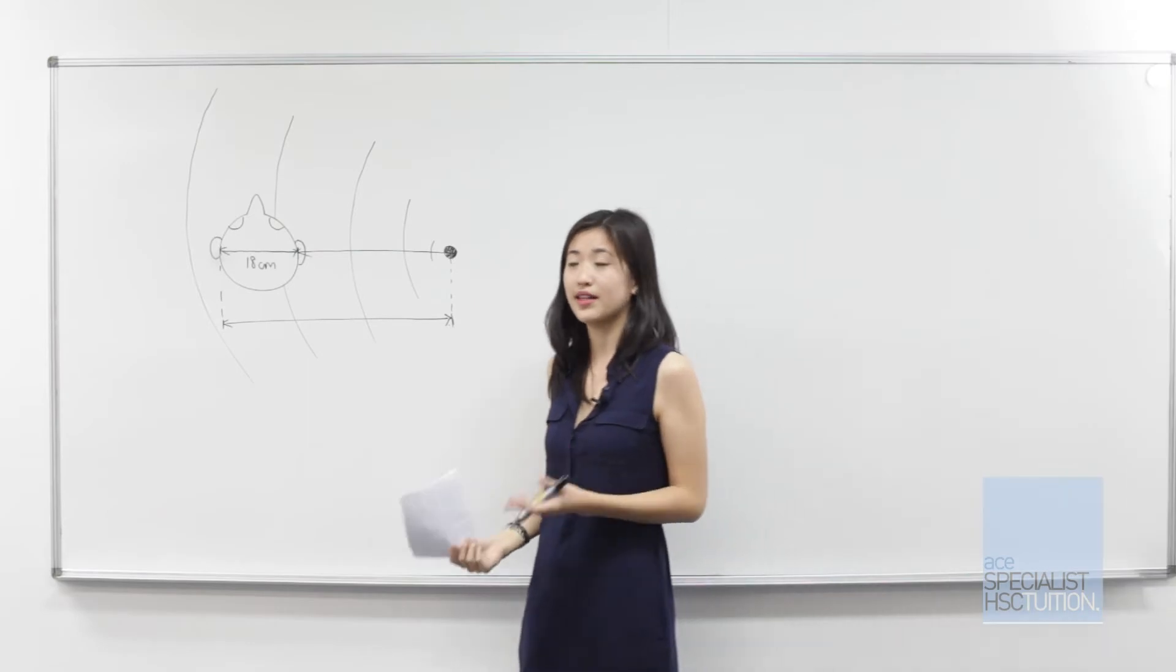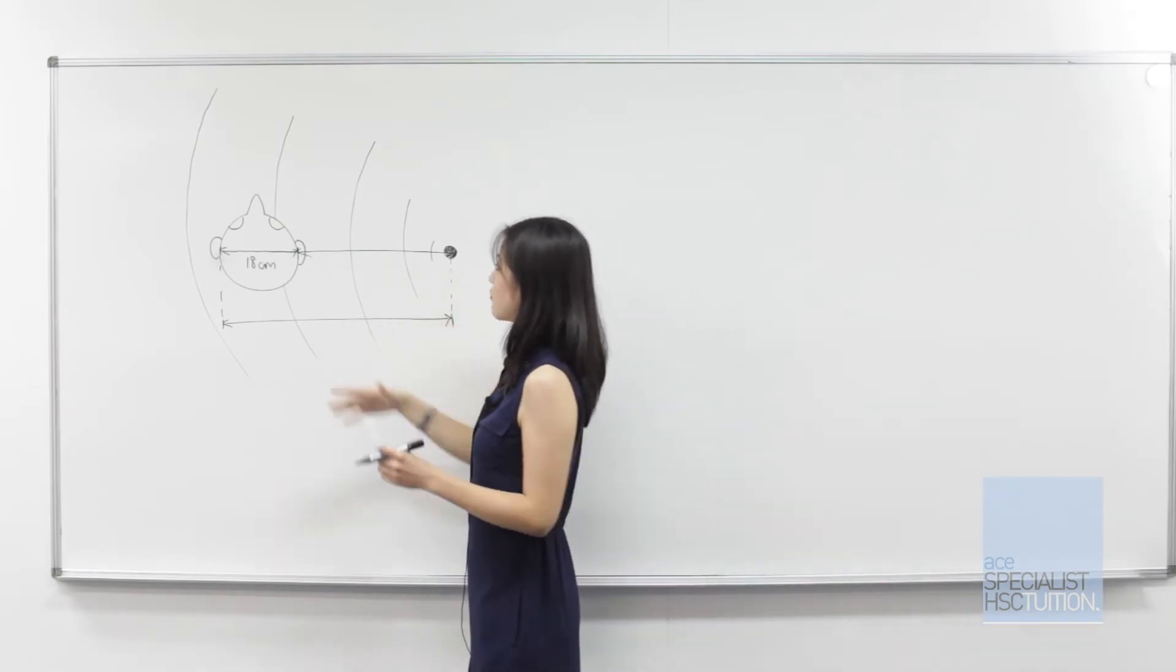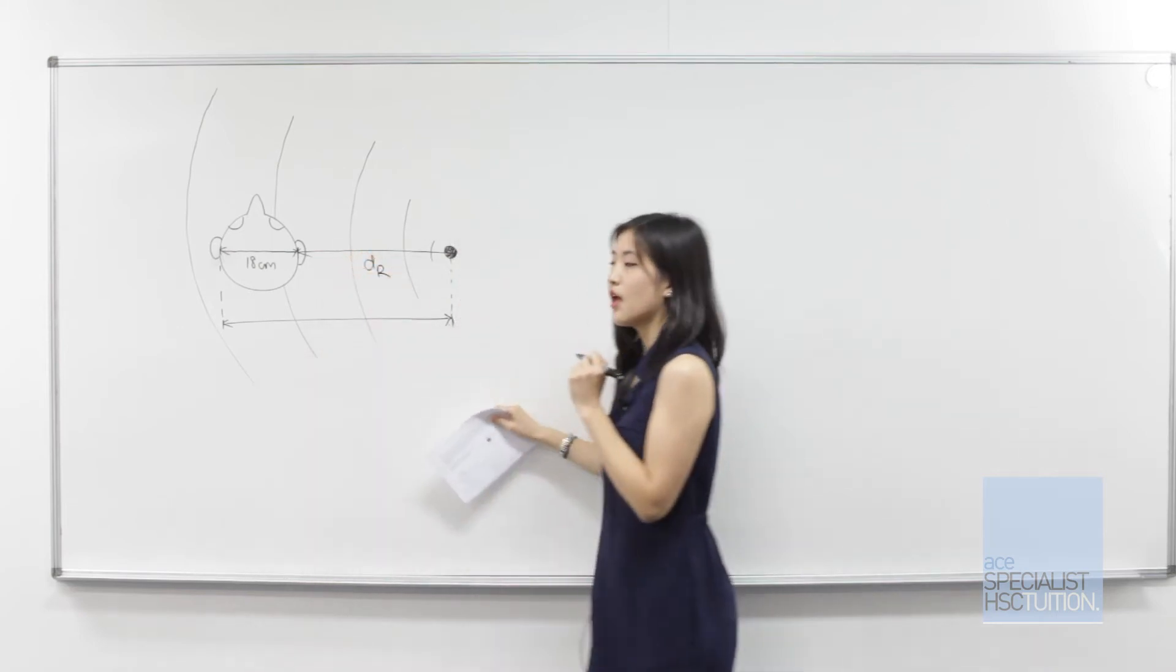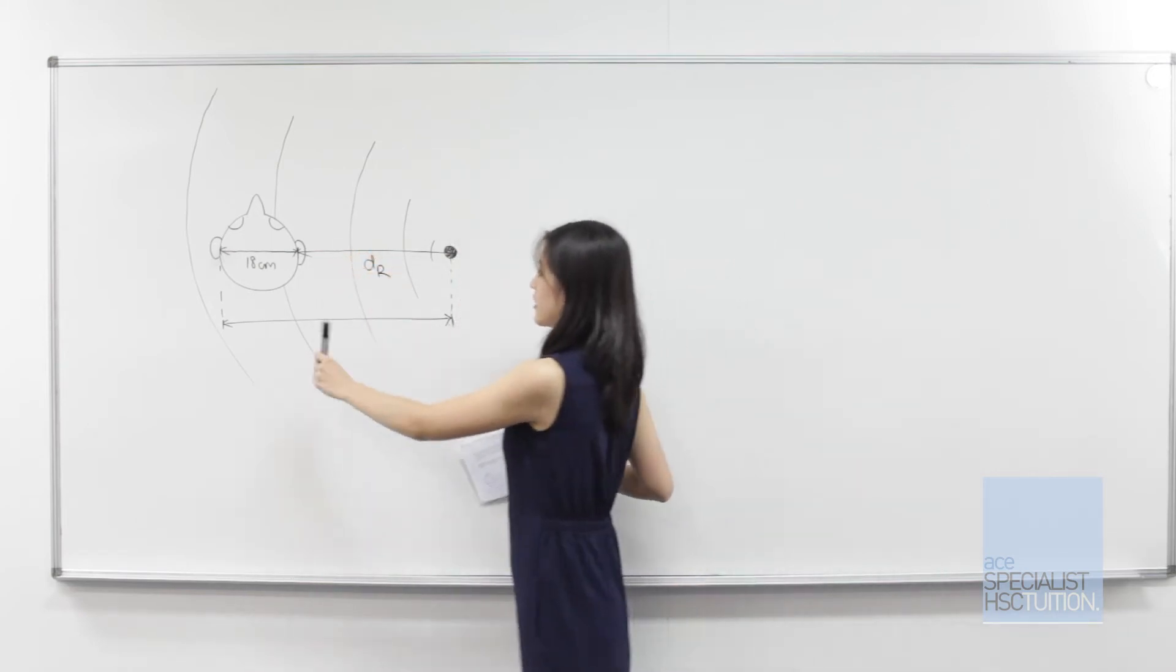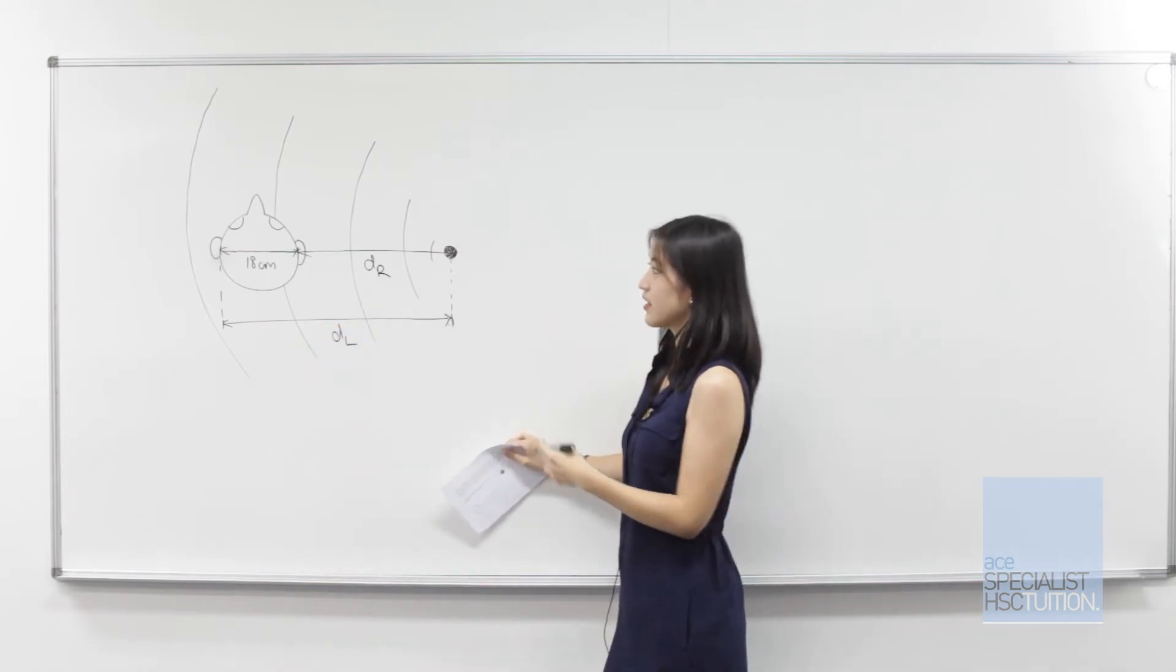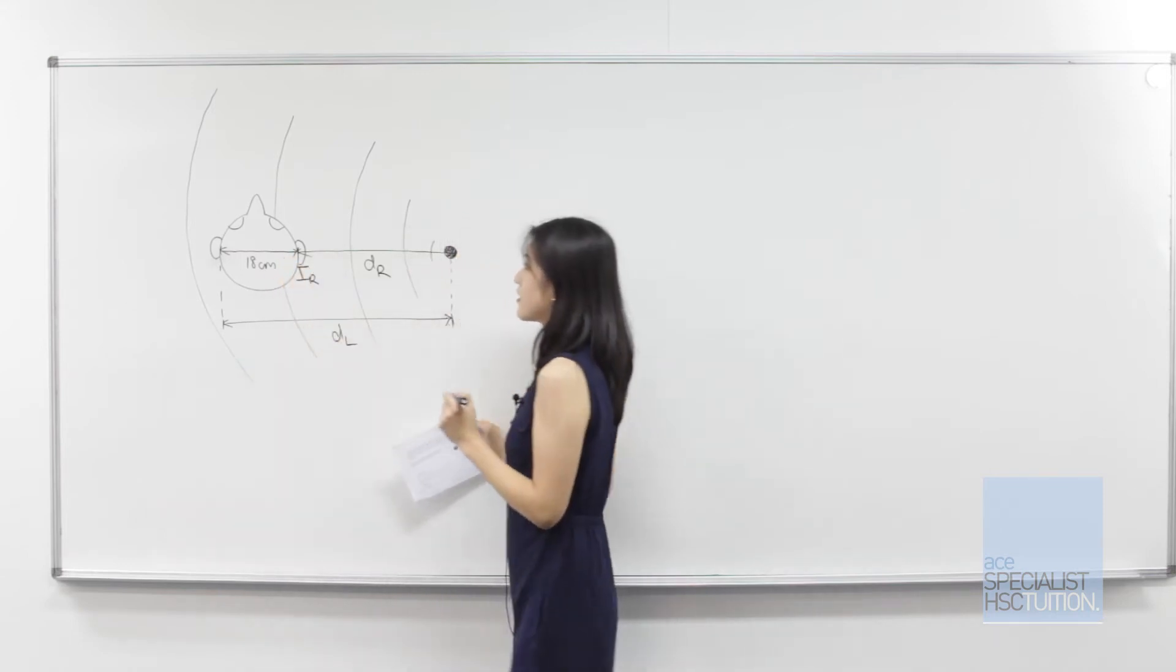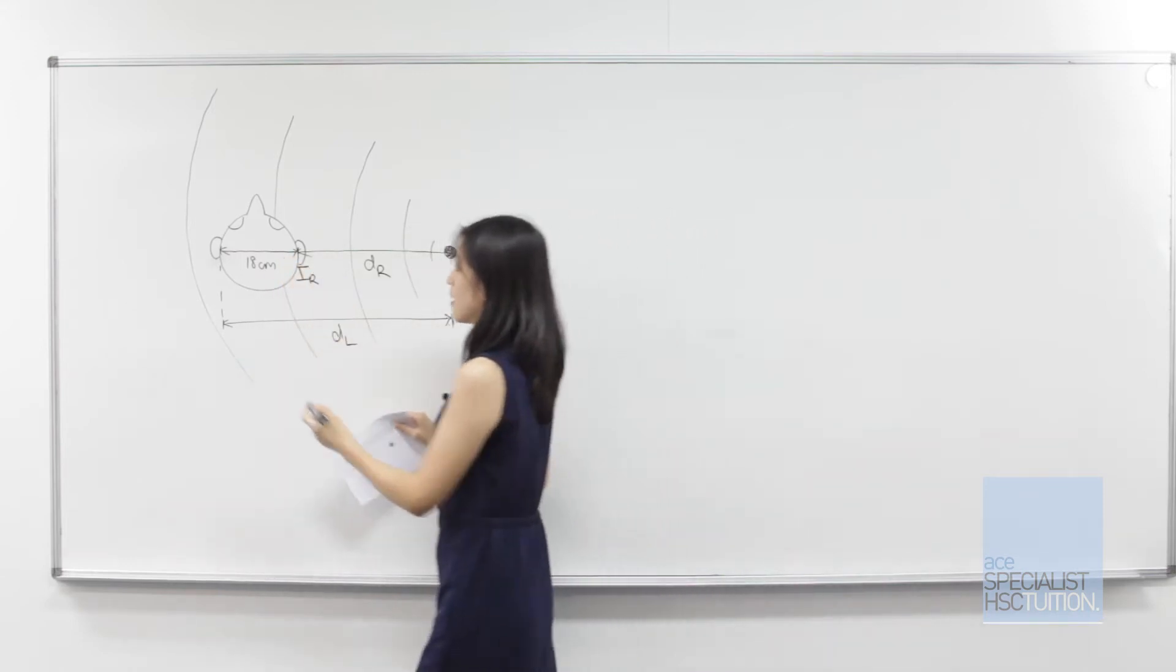Let's start by labeling our variables. Let the distance between the sound and the right ear be dr and the distance to the left ear be dl. The intensity of the sound at the right ear is ir and the intensity of sound on the left ear is il.